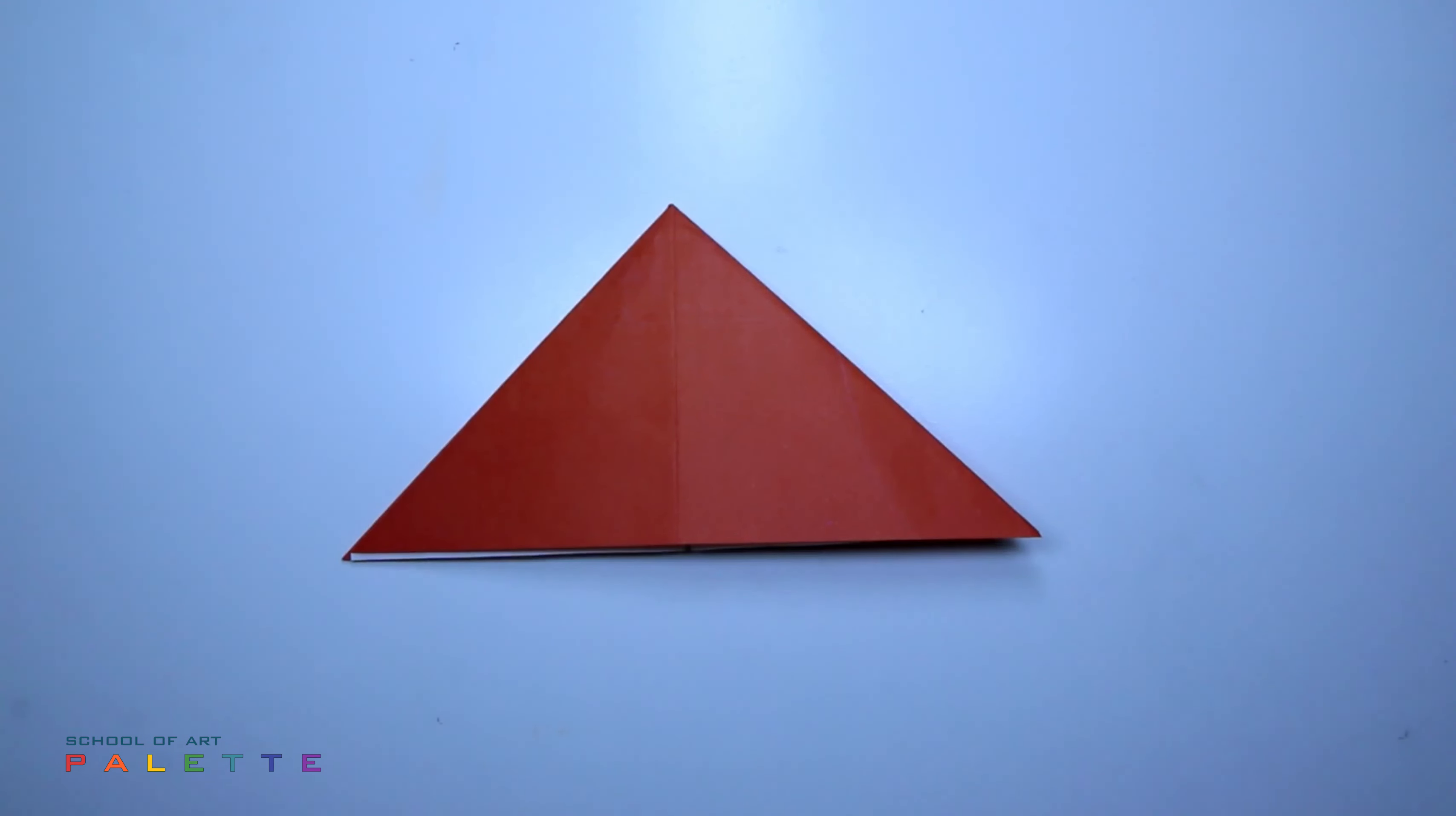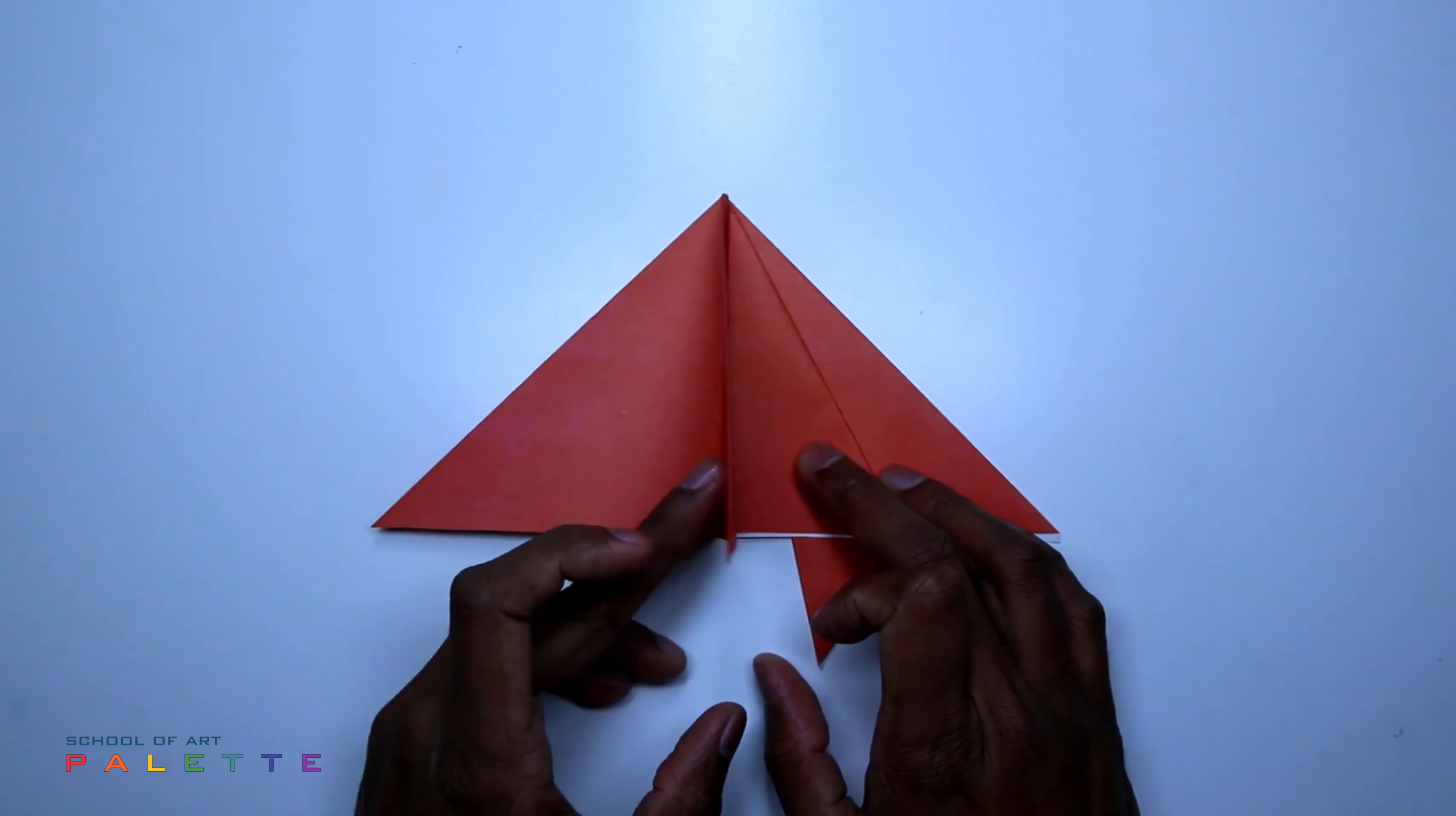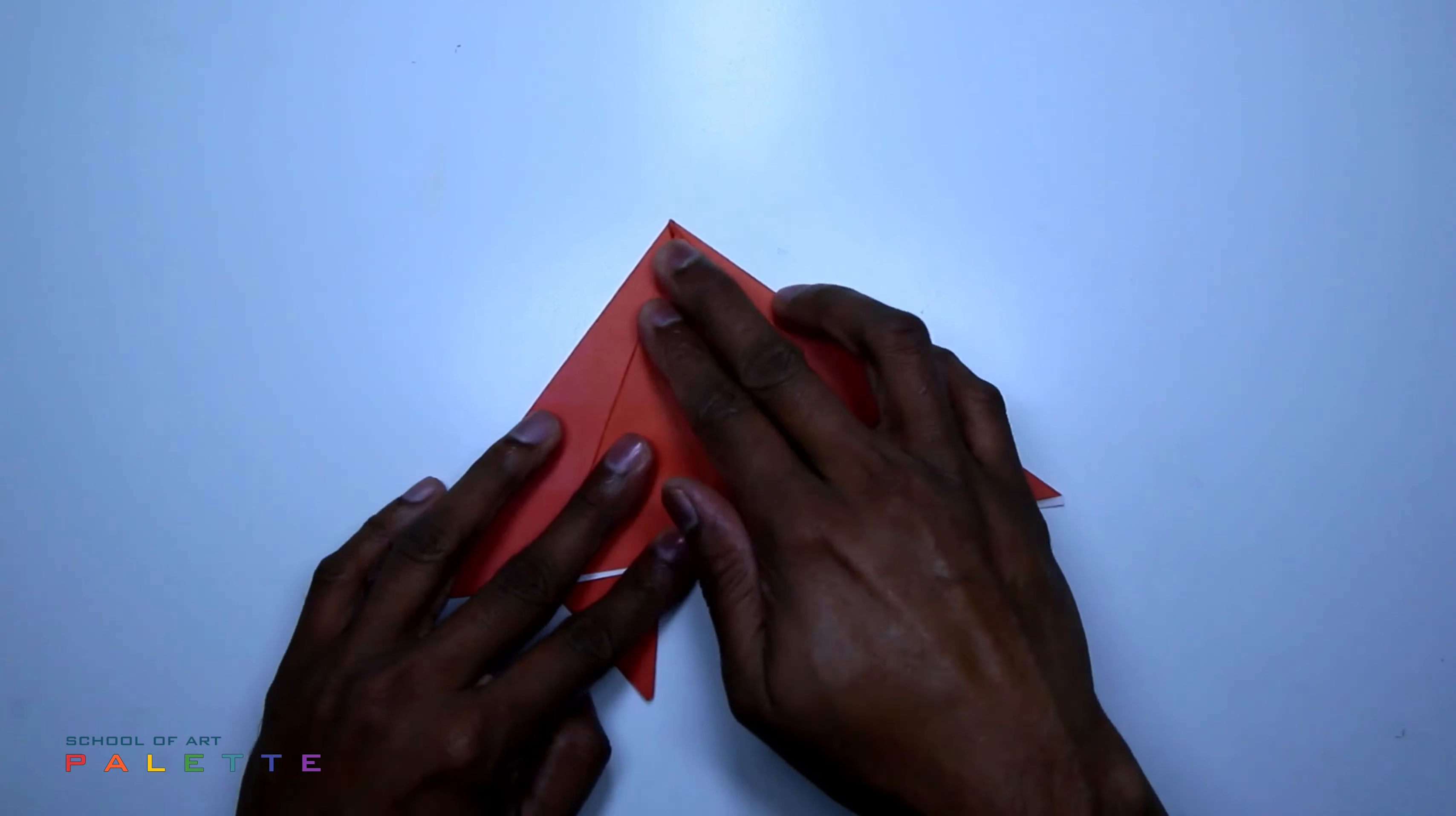Imagine here is one line like this slanting. You have to fold that right side through that line. Like this. Left side also. Fold. Make it like this.